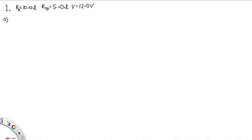So for part A we have our battery, we have a resistor, we have a light bulb, and these are connected in series. There's only one way that the current can flow around the circuit.